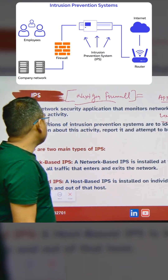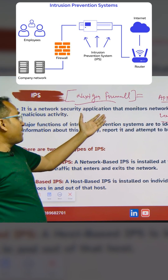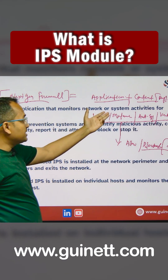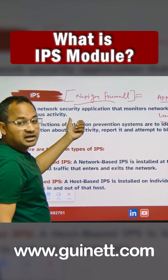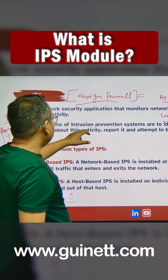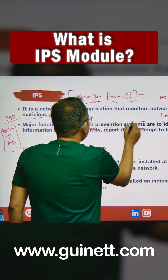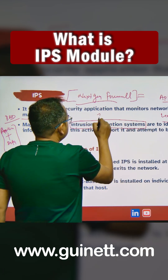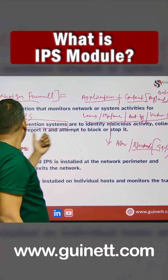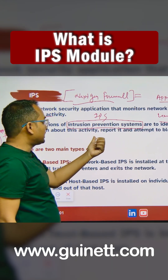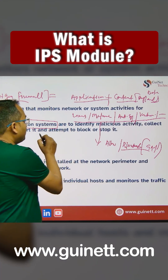The Intrusion Prevention System is a network security application that monitors the network and system activities for malicious activity. The major functions of the Intrusion Prevention System are: identify the malicious activity, collect information about this activity, report it, and attempt to block or stop it.